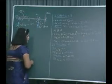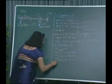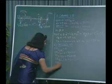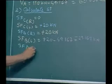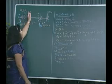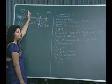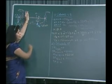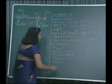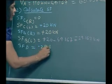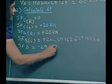At point D there is no point load, so we do not calculate just right and just left. Placing the section at D, the same forces on the right side give shear force at D equal to minus 29.167 kilonewtons.